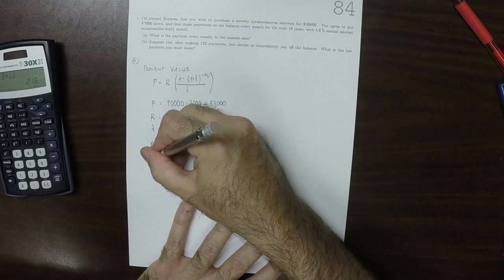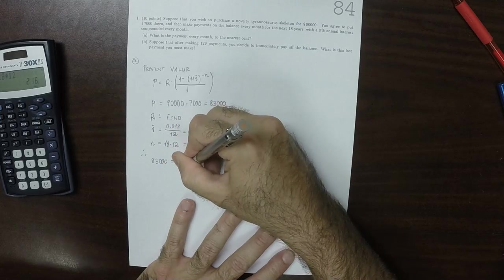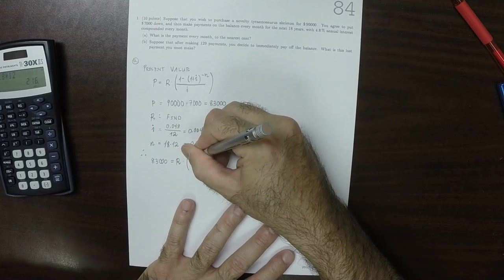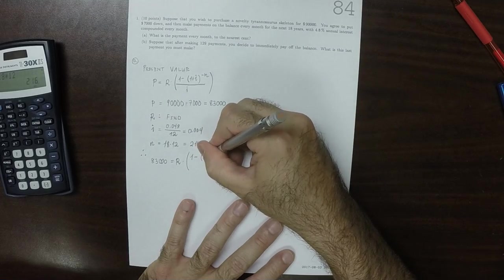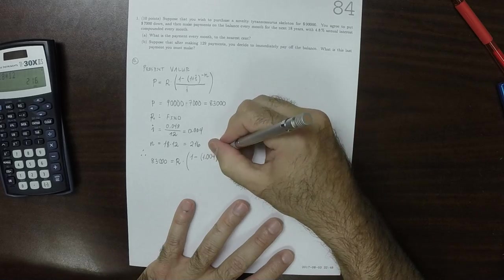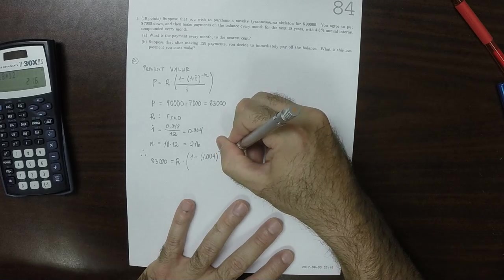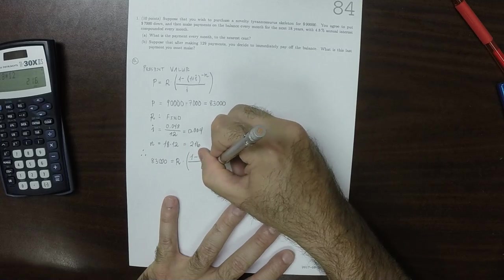So 83,000 is the unknown R multiplied by 1 minus 1.004 to exponent negative 216, and then divide by 0.004.